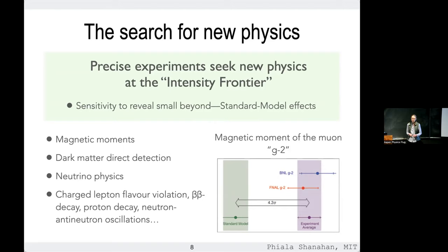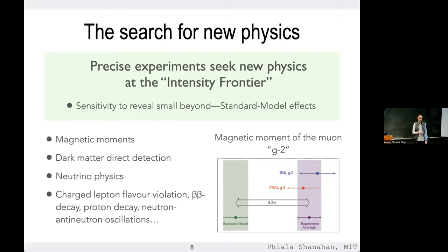One major effort to find physics beyond the Standard Model is through experiments at the intensity frontier — very precise experiments looking for very small deviations between what we predict and what we measure. This includes magnetic moments: the muon's magnetic moment shows a tension at about four standard deviations between theory and experiment. Dark matter direct detection also falls into this category, where we look for potentially very weak interactions of dark matter with terrestrial detectors. Many neutrino physics experiments fall here too.